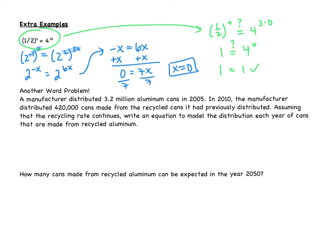Let's do a word problem. A manufacturer distributed 3.2 million aluminum cans in 2005. In 2010, the manufacturer distributed 420,000 cans made from the recycled cans it had previously distributed. Assuming that the recycling rate continues, write an equation to model the distribution each year of cans that are made from recycled aluminum. We have two things that are going on here. We have year, and we have number of cans. Time is going to be your x. x is always the independent variable, which in this case is going to be time. Now, what I'm going to do is I'm going to do number of years since 2005.